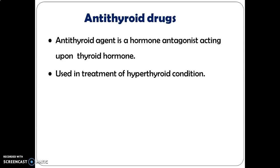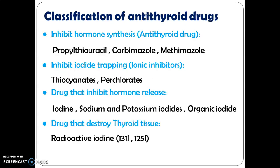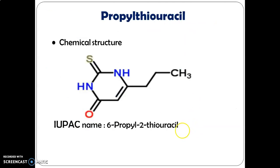Antithyroid drugs are hormone antagonists acting upon thyroid hormones and used for the treatment of hyperthyroid conditions. Classification: (1) drugs that inhibit hormone synthesis — propylthiouracil, carbimazole, and methimazole; (2) drugs that inhibit iodine trapping — ionic inhibitors such as thiocyanates and perchlorates; (3) drugs that inhibit hormone release — iodine, sodium/potassium iodides, and organic iodide; (4) drugs that destroy thyroid tissue — radioactive iodine (iodine-131 and iodine-125).